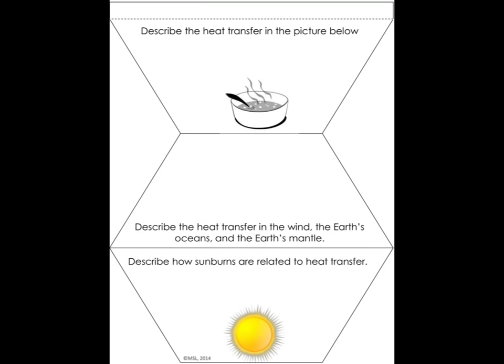All right, so now that we've gone through the three different types of energy transfers, the heat energy transfers, and you've written those down in your notes, now take out this handout. So now, based on what you saw in this last video, now you're going to go ahead and try to fill out this right here on your own. The first question says, describe the heat transfer in the picture below. So you have this picture right here. So right here in this spot, you're going to write down what kind of heat transfer is going on. Is it conduction? Is it convection? Or is it radiation? And how do you know?